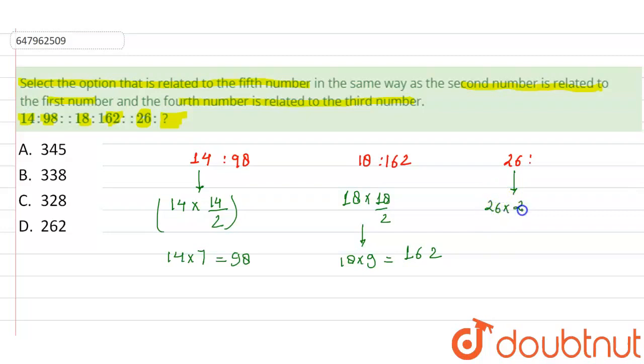26 into 26 by 2 मतलब 26 into 13. मतलब क्या आएगा? यहाँ पर 338. यह यहाँ पर answer हो जाएगा जो कि B option में. So, B is correct here.